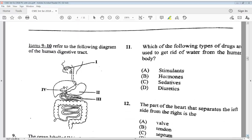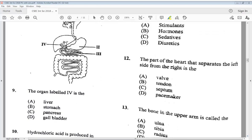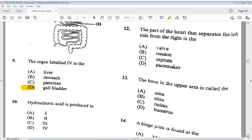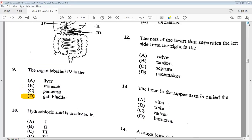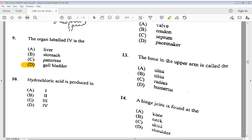Let's go to items 9 to 10. Items 9 to 10 refer to the following diagram of the human digestive tract. So it is labeled four parts. 9. The organ labeled four is the, we know that is the gallbladder. So 9 is D. Let's go to 10. Hydrochloric acid is produced in A, 1, B, 2, C, 3, D, 4. So we know hydrochloric acid is produced at 2. That is the stomach. So B would be your answer.